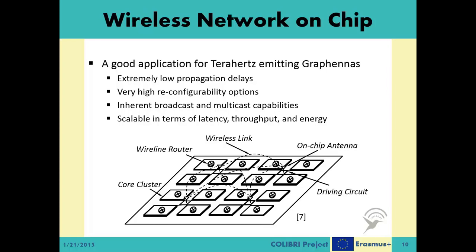We had briefly discussed the wireless network-on-chip application at the introductory level. This is a very good application for graphennas and terahertz signaling in general. In a system-on-a-chip solution with a high number of cores, cores can communicate with each other via terahertz signaling using graphennas. Since they are very small in size, it is no problem to fit them next to each core with ease. This way, we have the cores able to communicate among themselves with extremely low propagation delays, high reconfigurability possibilities, and inherent broadcast and multicast capabilities. Since the terahertz band offers huge data rates and graphennas require low energy to operate, such a wireless network-on-chip system is very scalable with increasing numbers of cores.